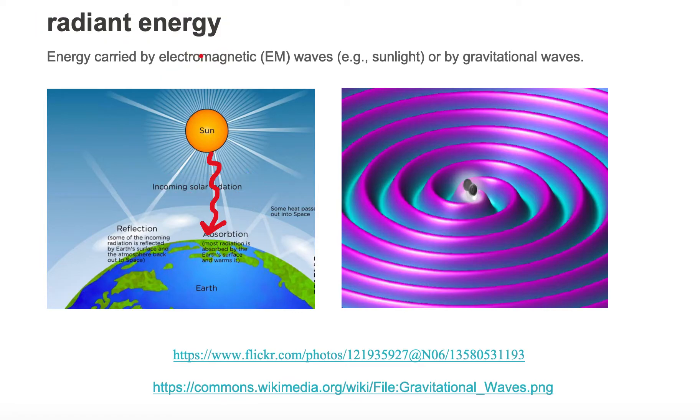Another example of radiant energy is these gravitational waves. Here we have two supermassive objects that are spiraling in towards each other. As they spiral in, they emit gravitational waves spiraling outward.